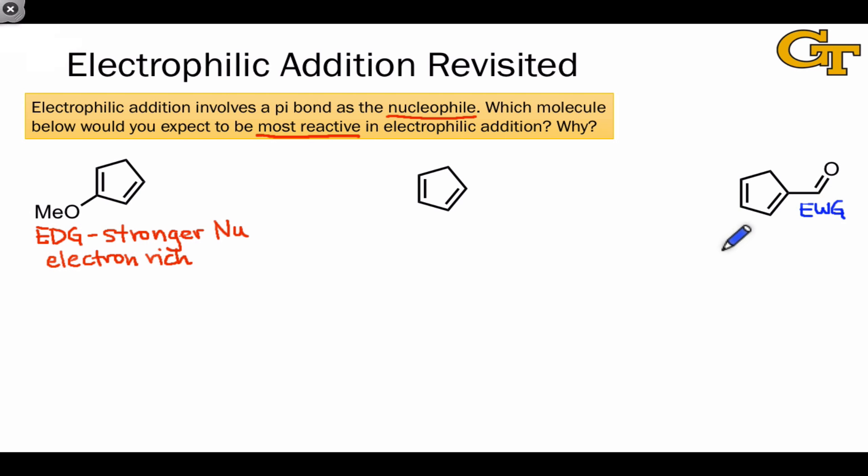Naturally then, the electron withdrawing group is going to exert the opposite effect. It's going to pull electrons away from the pi system, making it a weaker nucleophile.